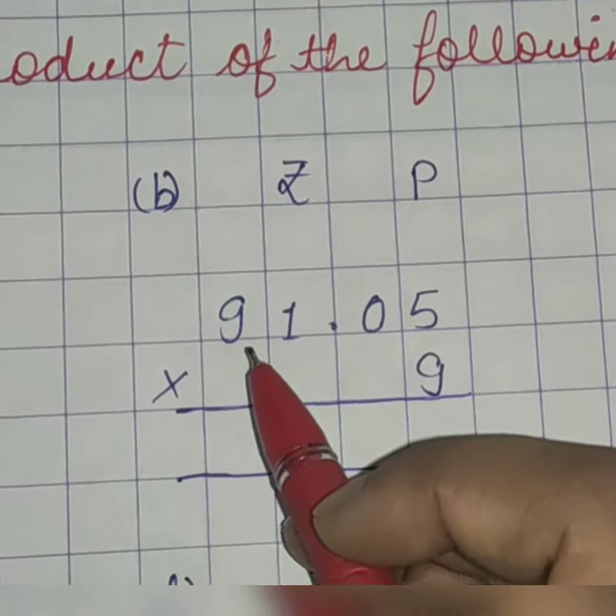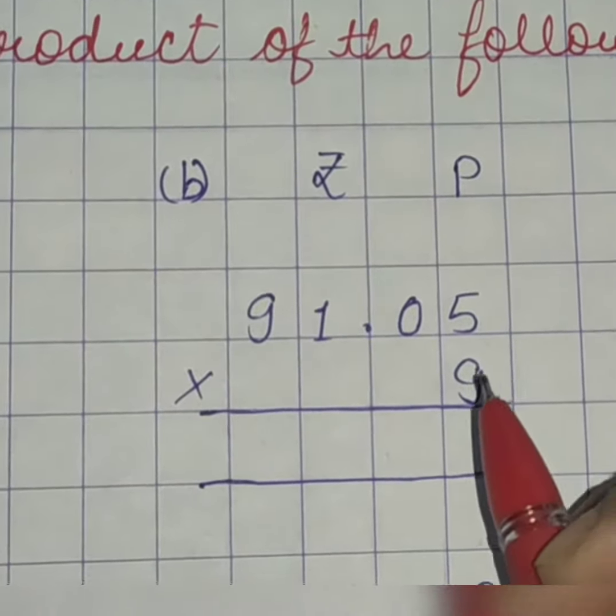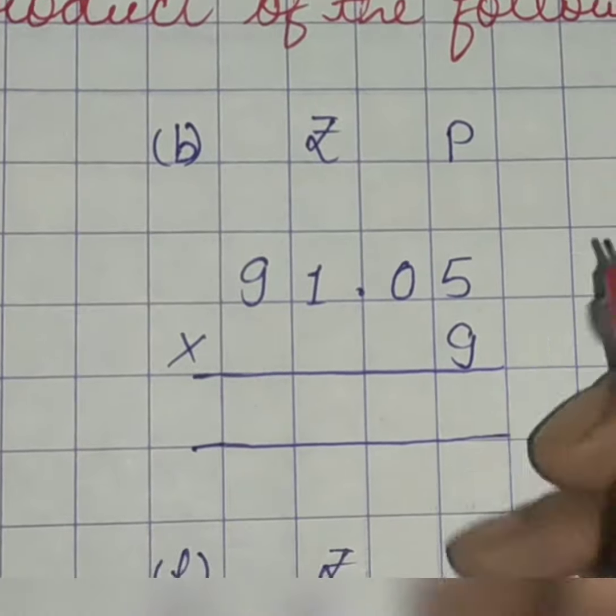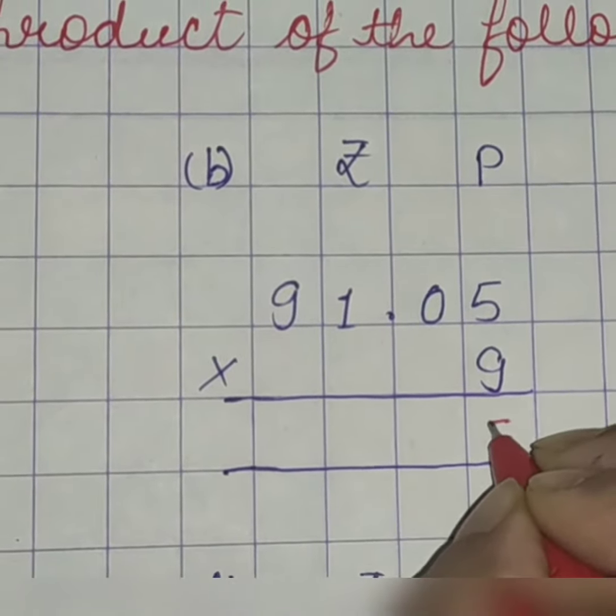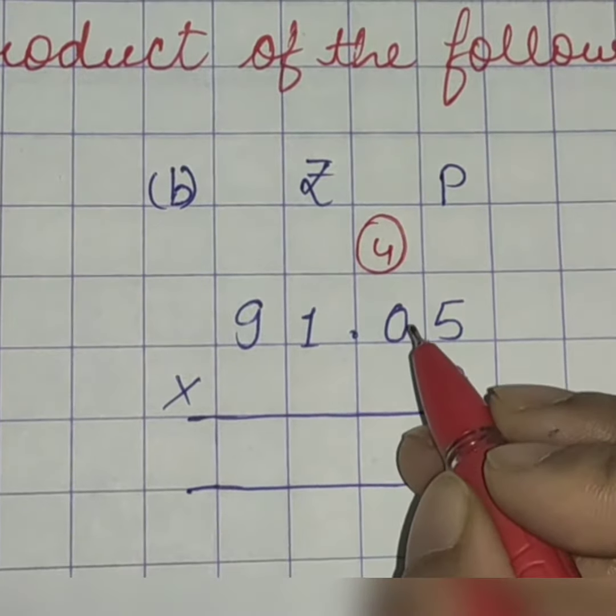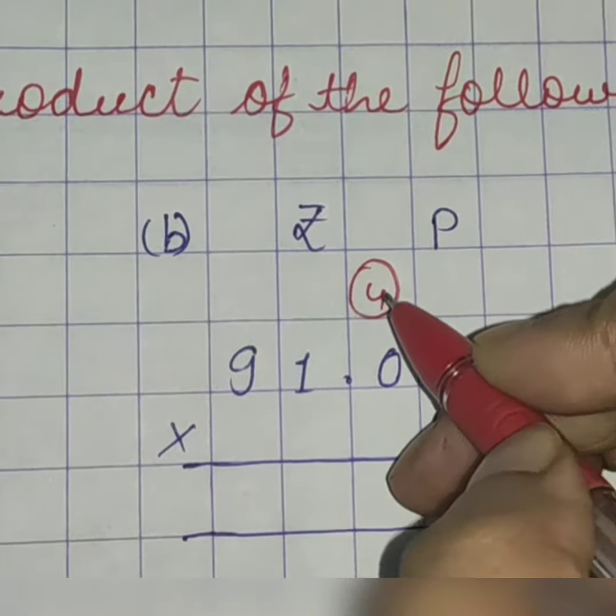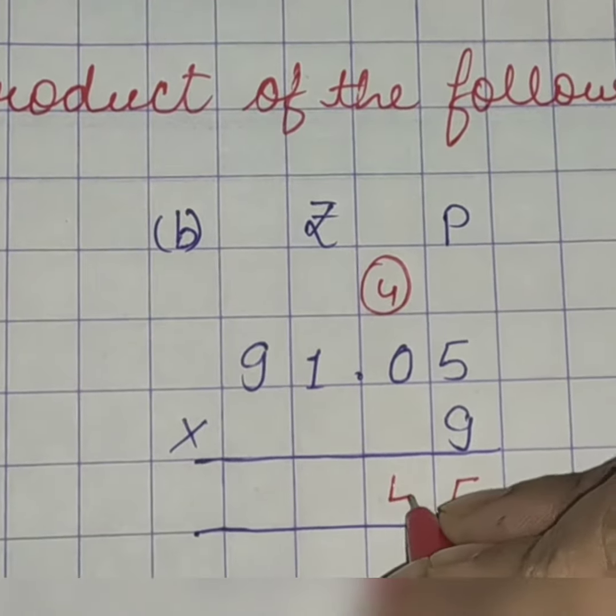Come to B1. 91 rupees, 5 paise and we have to multiply it by 9. So, 9, 5's are 45. 5 here, 4 as a carryover. 9 multiplied by 0 will be 0 only. But there is 4 in the carry, so we will write 4 as it is.